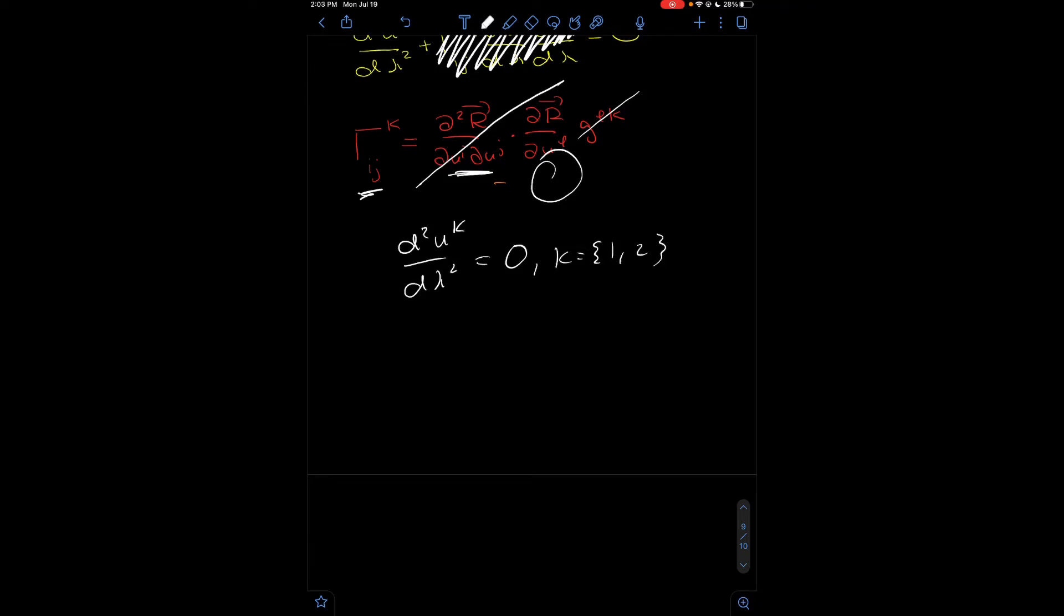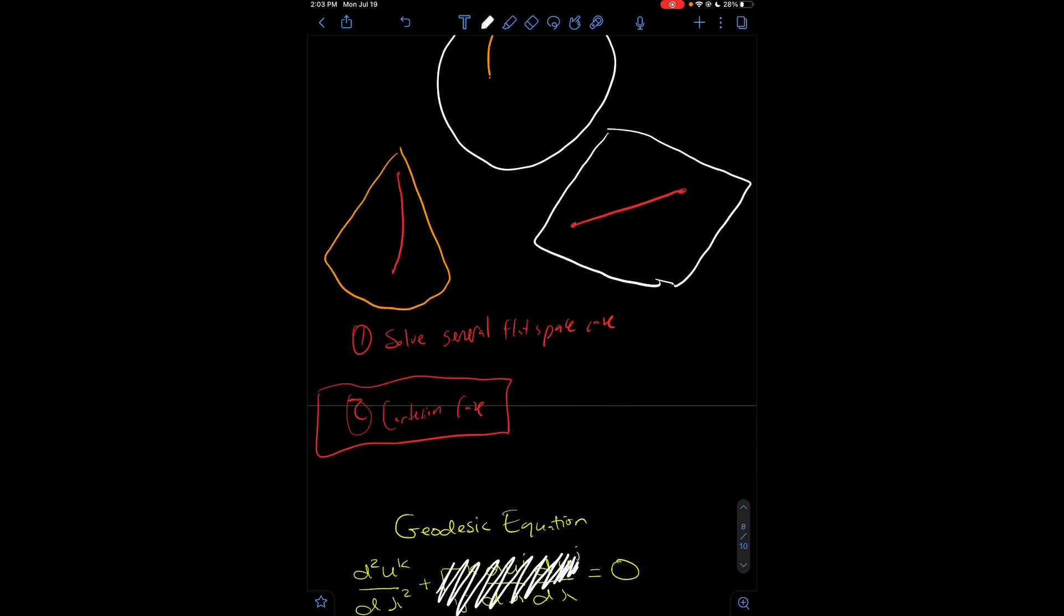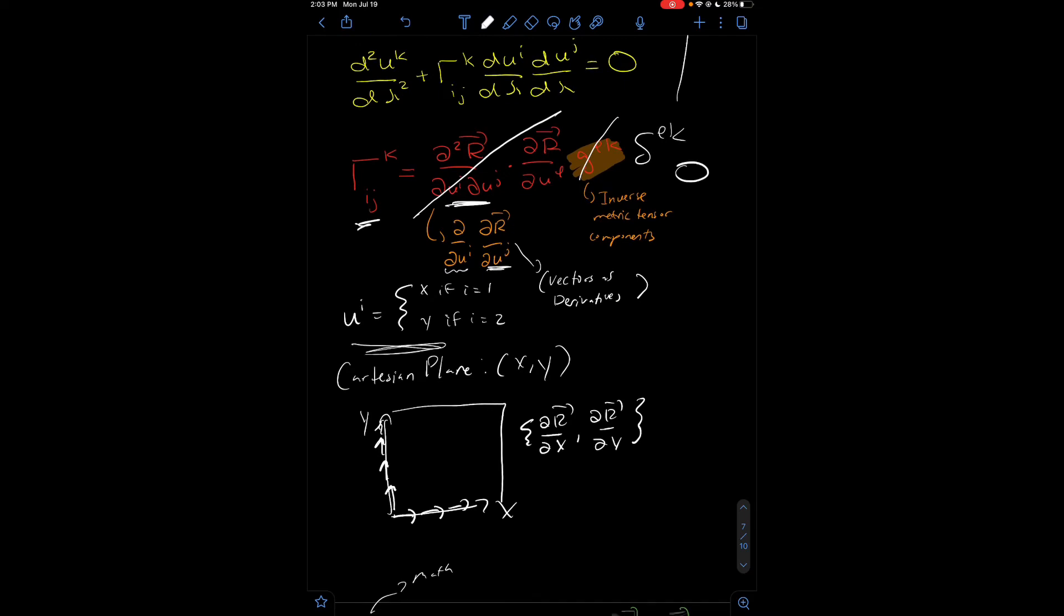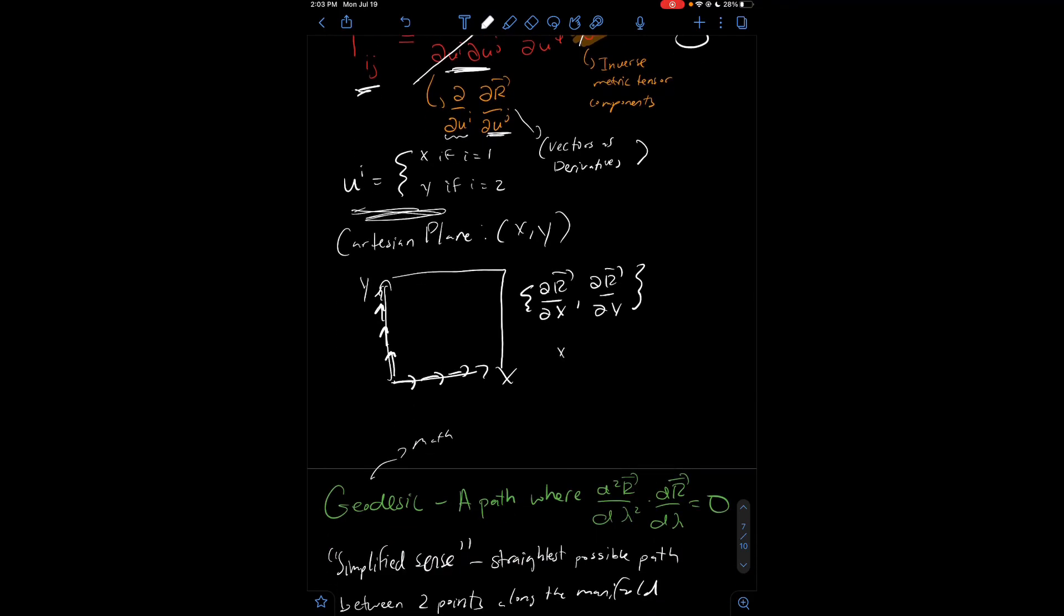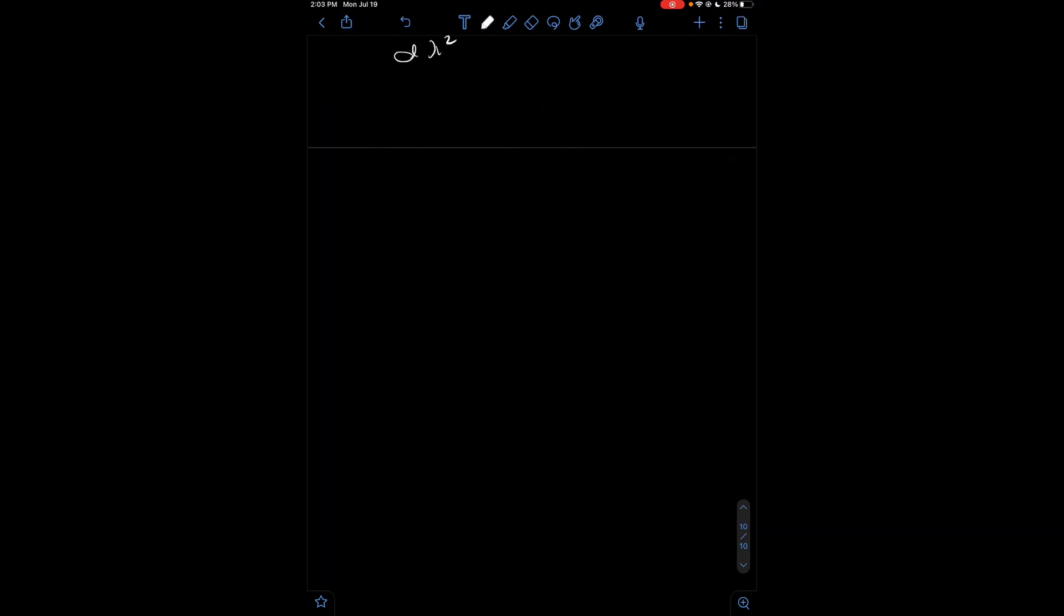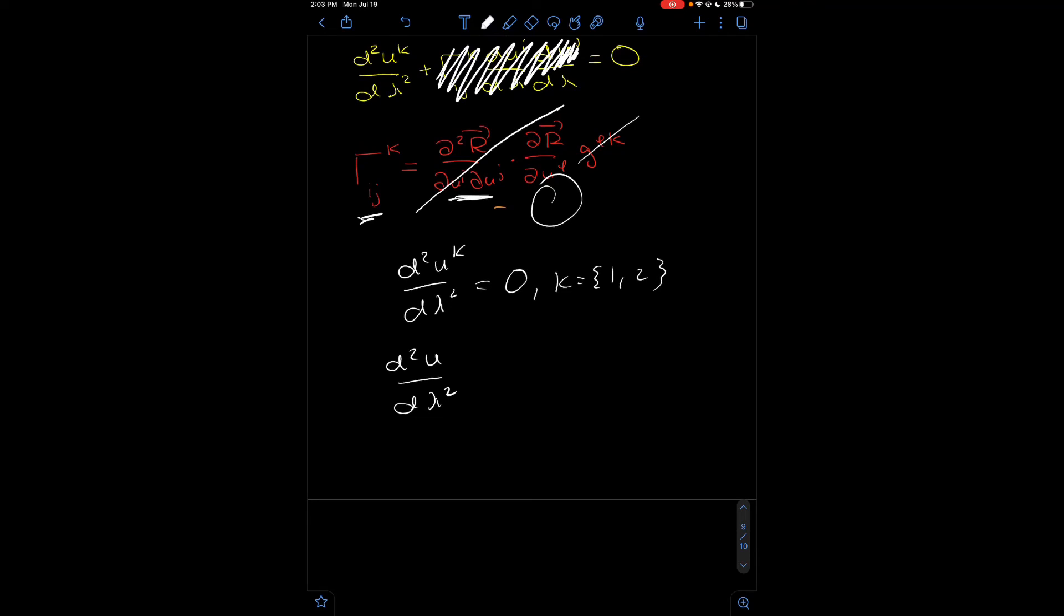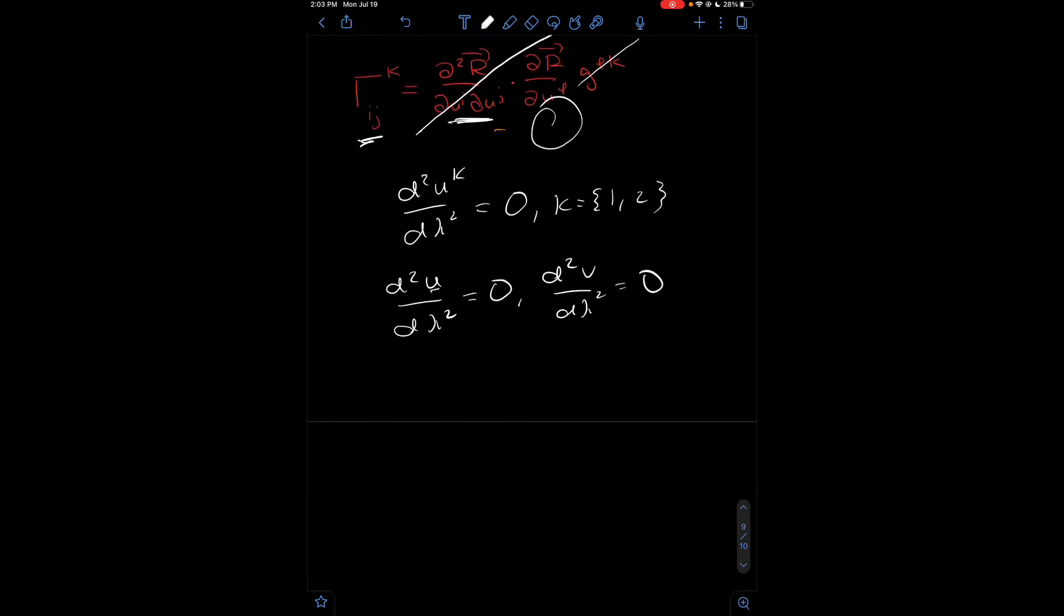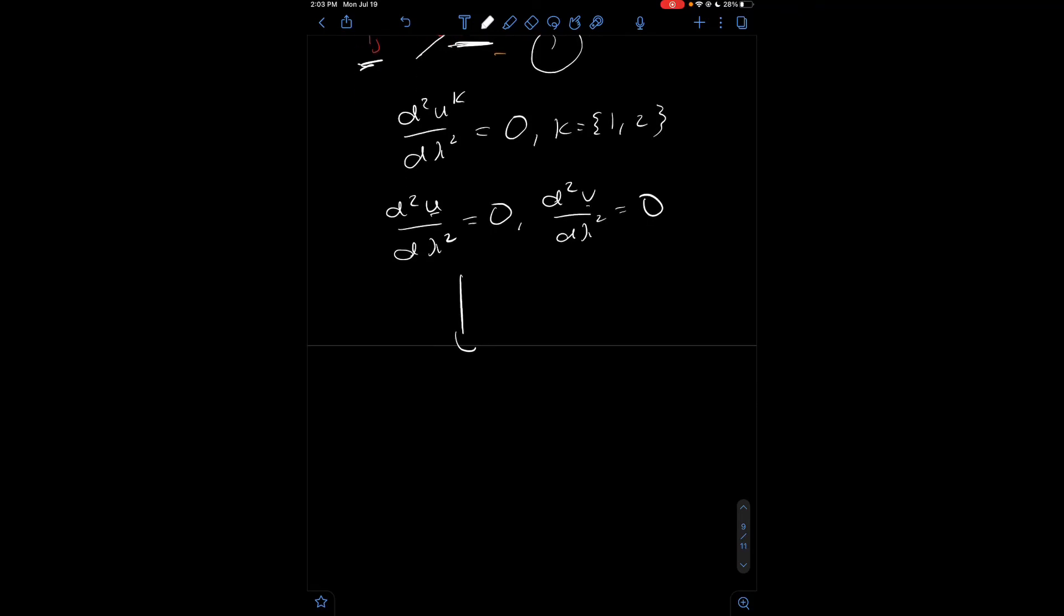So, here k can take on two variables, it can be one or two. For the case where k equals one, we'd have second derivative of u. Oh, I should probably specify this at the start. Oh, I did do that. Very good. Basically, x equals u and y equals v, pretty much. So, we'd have u double dot equals zero. Then we'd have second derivative of v would also be zero.